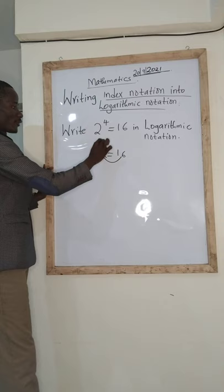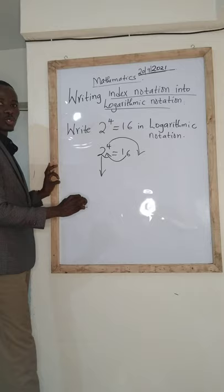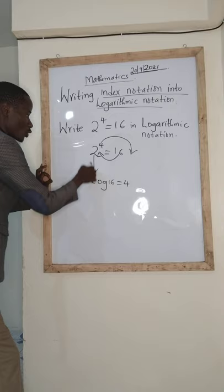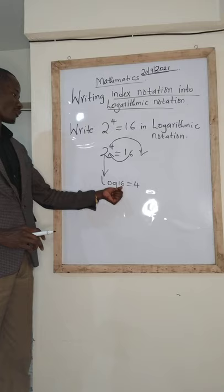And then we introduce logs. So we shall have log 16 is here now. Is equal to 4. While the 2 goes downwards. Therefore it comes here as the base. This one is read as log of 16 to base 2 is equal to 4.